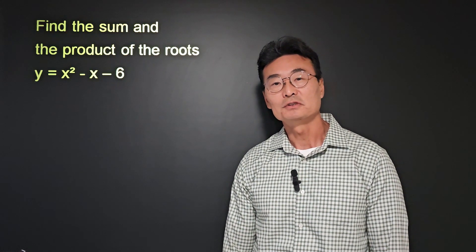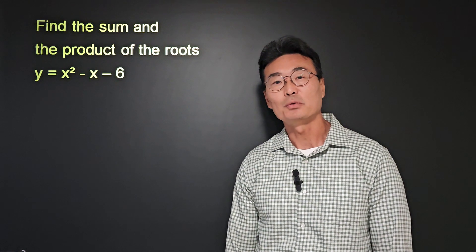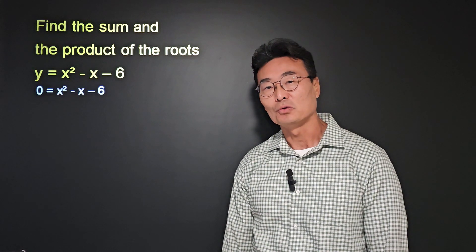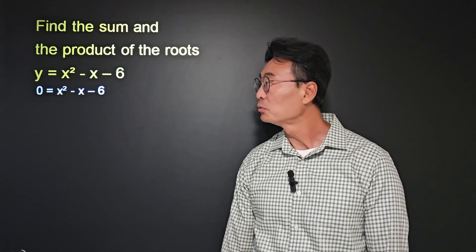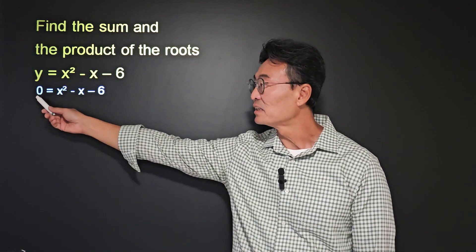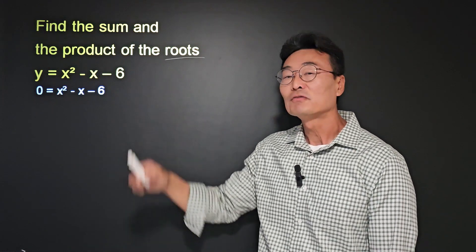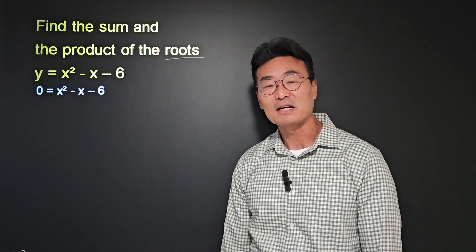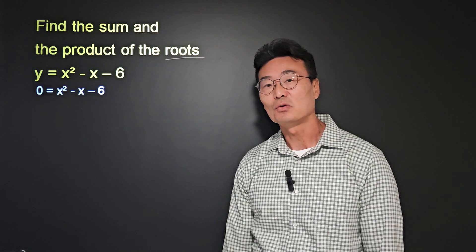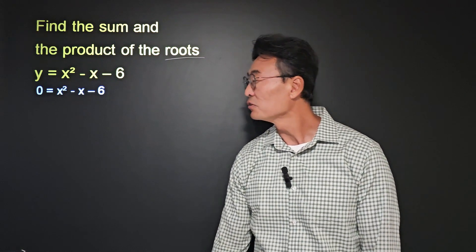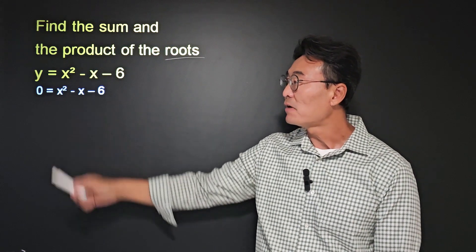To find the sum and product of roots of a quadratic equation, we need to set the value of y equal to zero. The reason we set it equal to zero is because we're looking for roots, the x-intercepts, or the zeros of the function.